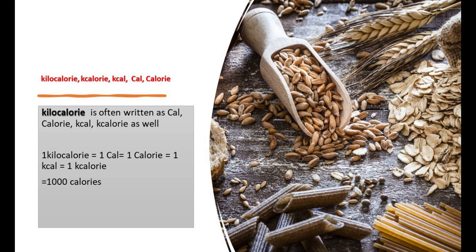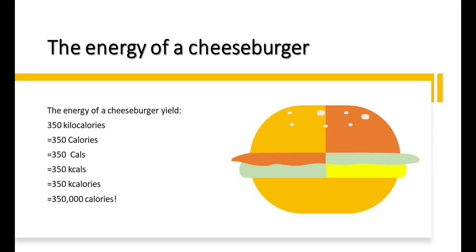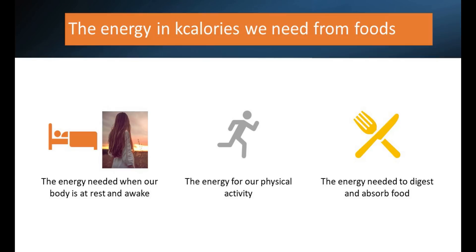One example to get a rough idea of kilocalories in daily life: one cheeseburger gives you 350 kilocalories, 350 kcal, or 350 Calories — where the C must be in capital form to distinguish from the small calorie. So if written in small calories, one cheeseburger gives you 350,000 calories.